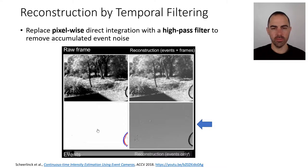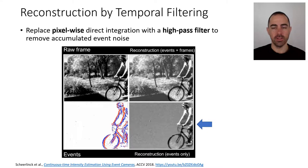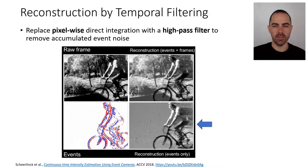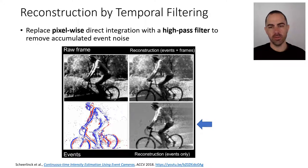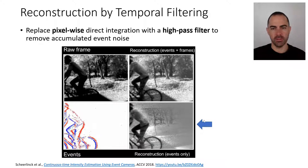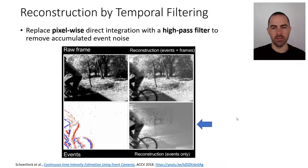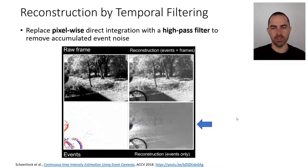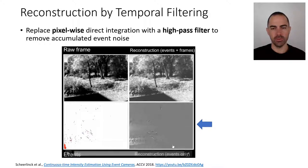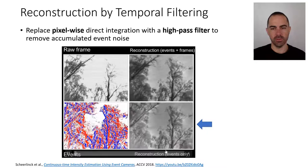Again, we have the input events on the left, and on the bottom right, just using a high-pass temporal filter, we are able to obtain a reconstructed image density. I think it's quite amazing that this can be achieved just by applying a high-pass filter to the events alone.